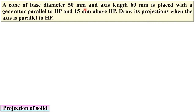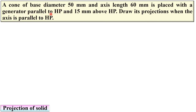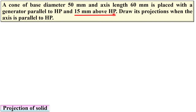A cone of base diameter 50 mm and axis length 60 mm is placed with a generator parallel to HP and 15 mm above HP. Draw its projections when the axis is parallel to HP.